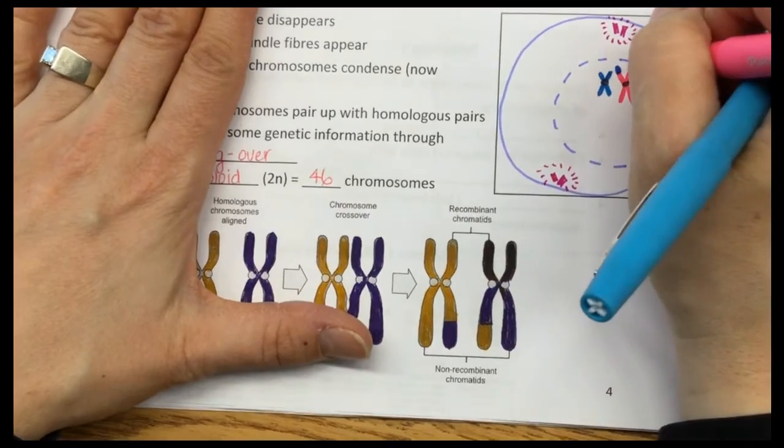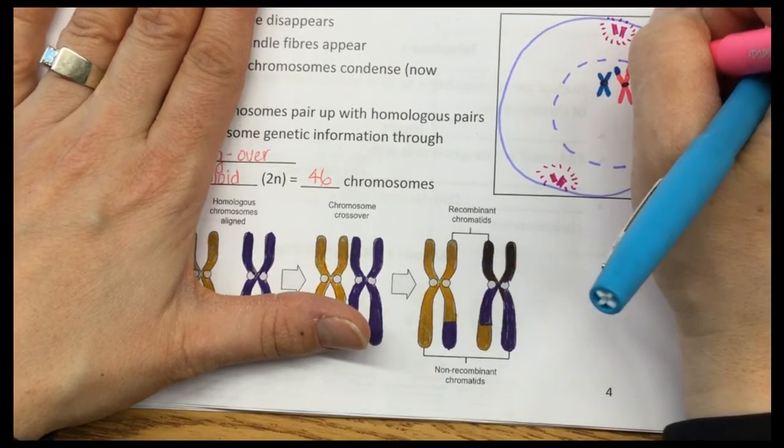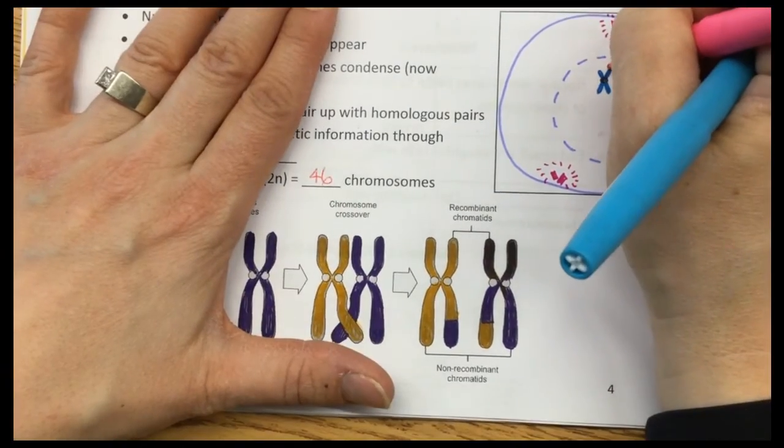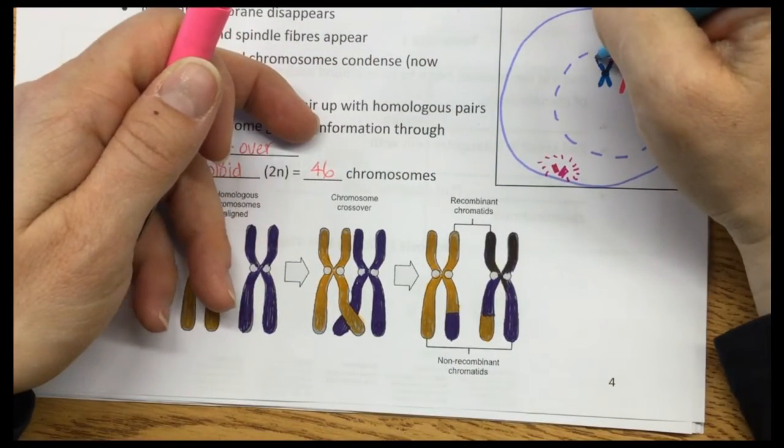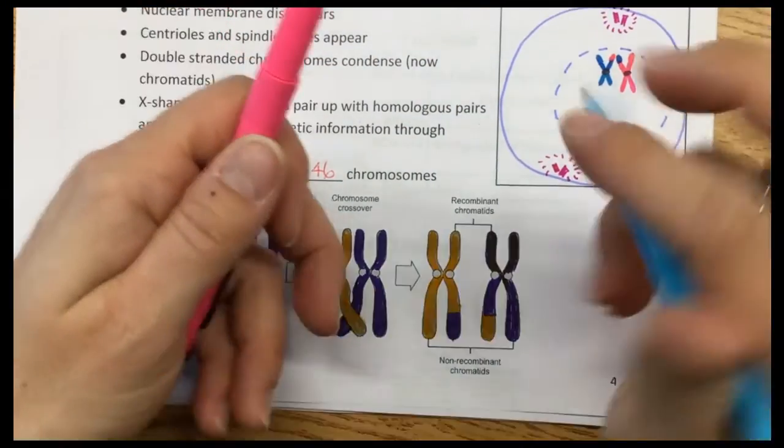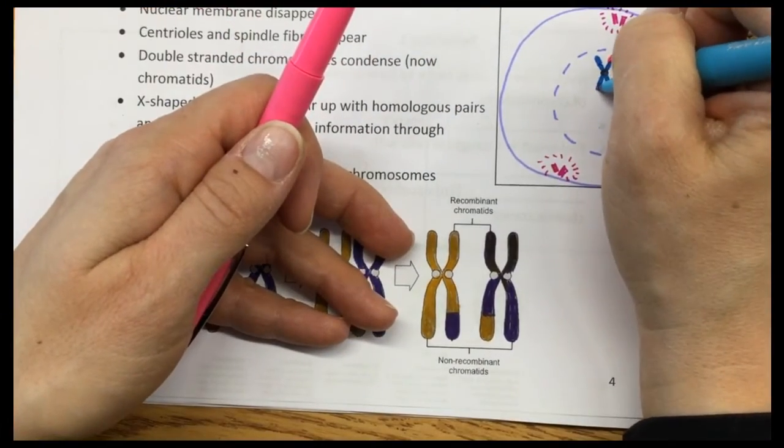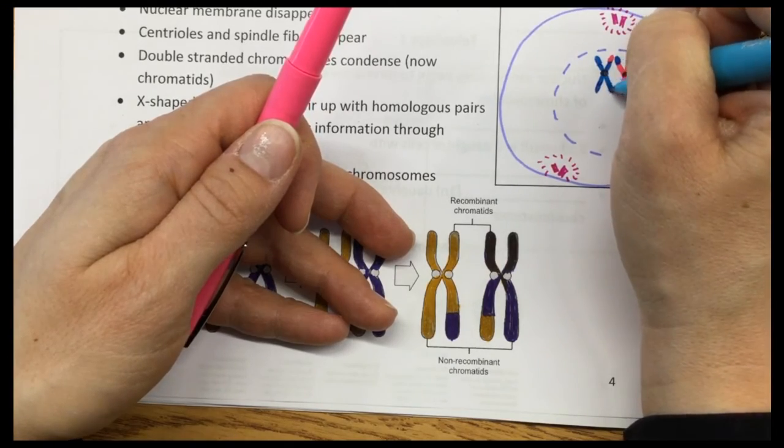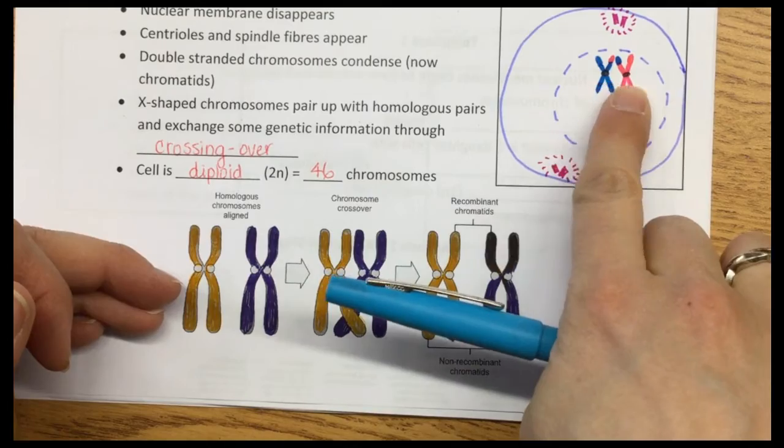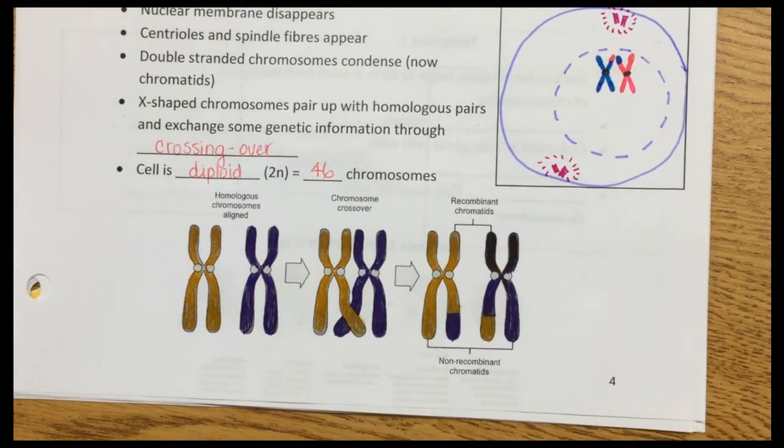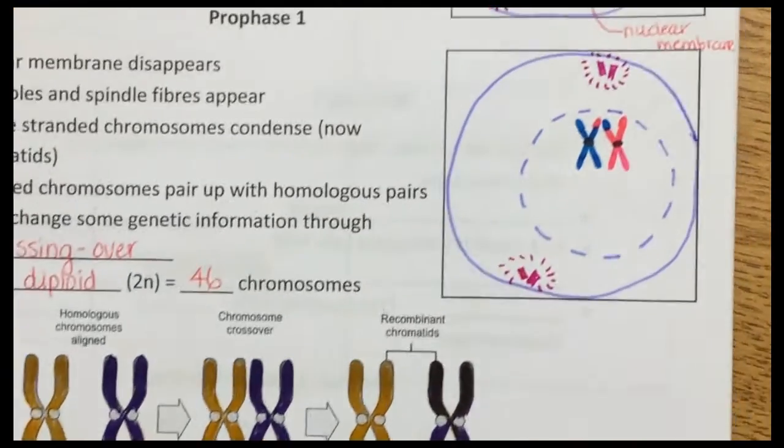I'm going to make this part just a little bit longer so it kind of matches up here. I'm going to swap a little piece here. We just want them to be the same kind of shape and size. These homologous pairs have crossed over some of their genetic information.